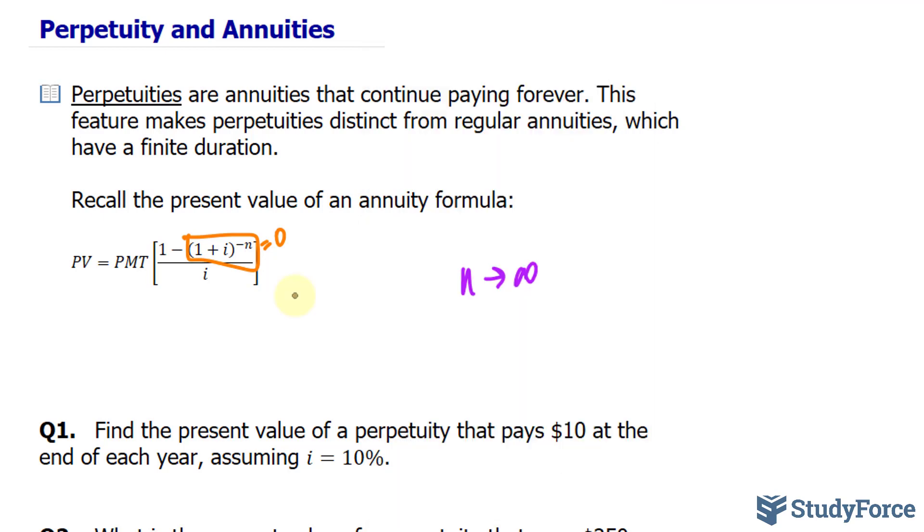And so, to calculate perpetuities, its present value, we use the formula PV is equal to PMT, which represents the payments, multiplied, and since this part has become 0, 1 over i.